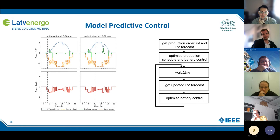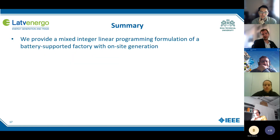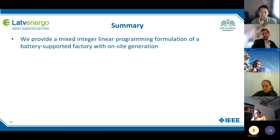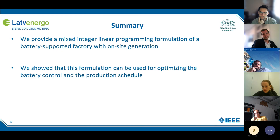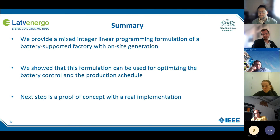Let's come to the summary. We provide a mixed-integer linear programming formulation of a battery-supported factory with on-site generation. We showed that this formulation can be used for optimizing the battery control and the production scheduling. The next step is, of course, a proof of concept with a real implementation. This was one use case of a digital twin where we showed how they can be used to optimize a manufacturing process.